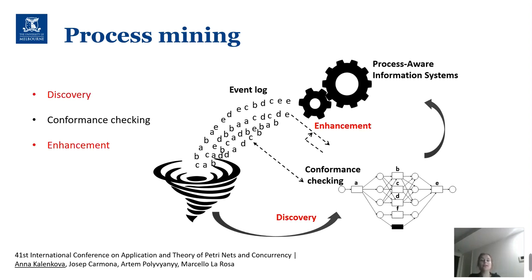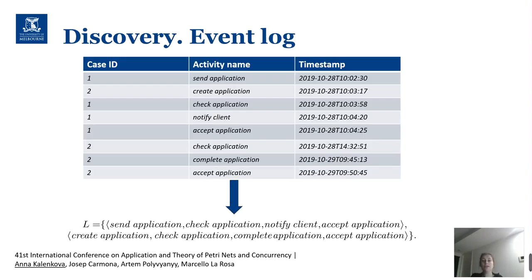In our paper, we consider two types of process mining algorithms: discovery and enhancement techniques. Discovery techniques take event logs as input. Event logs can be considered as sets of records, and these records have case IDs that correspond to particular process instances or process executions, event names that correspond to particular events, and timestamps which show when this event happened.